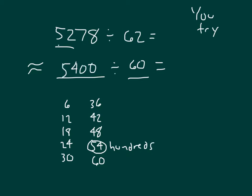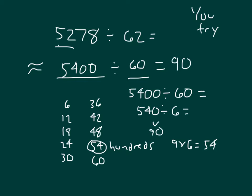And 9 hundreds times 6 equaling 5,400. Working that out. What we do is we end up getting 5,400 divided by 6, which is 90. So our estimated quotient is 90.